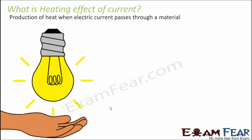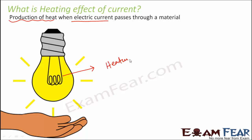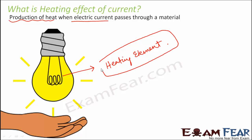Now that we have looked at many applications, how do we define the heating effect of current? It is the production of heat when electric current passes through a material. This effect is seen due to the presence of a heating element — for example, the filament of a bulb acts as the heating element. A heating element can be defined as a coil of wire that has a very high melting point and does not get oxidized when heated. Only materials which contain such a heating element will show the heating effect of current.